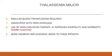In the case of thalassemia major, regular blood transfusions are required. Because of the repeated blood transfusions, iron overload can occur. For that, iron chelation therapy is used, and this has improved mortality and morbidity. The chelating agent used to chelate the iron is known as desferrioxamine.